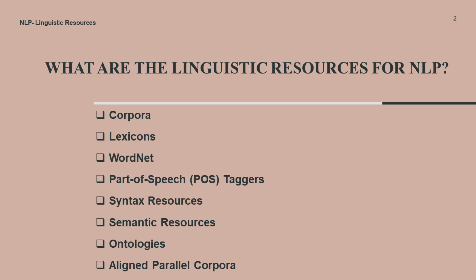Finally, there is Aligned Parallel Corpora. Aligned Parallel Corpora consist of texts in two or more languages that are translated versions of each other. These resources are used for tasks such as machine translation, cross-lingual information retrieval, and bilingual dictionary creation. These linguistic resources serve as valuable references for training and evaluating NLP models, enabling them to understand and process human language more effectively.